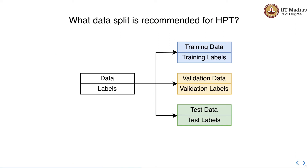Now let's study what kind of data splits are recommended for hyperparameter tuning. We divide the training data into three sets: training set, validation set, and test set. Each set consists of a feature matrix and labels. The test set is set aside and not used during hyperparameter tuning — we only use the training and validation sets for that stage.